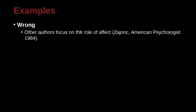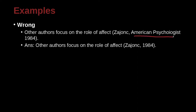Other authors focus on the role of affect (Zajonc, American Psychologist, 1984). Here you can see there's a comma and then a journal name. However, in APA, we clearly don't need a journal name — we just need the author, comma, year. Pay attention: before the comma, no space; after the comma, one space. Then the year of publication, 1984. That's all you need.